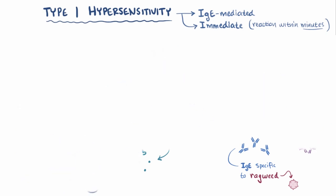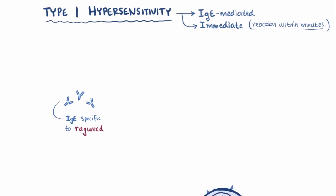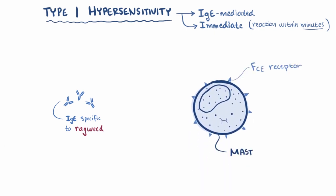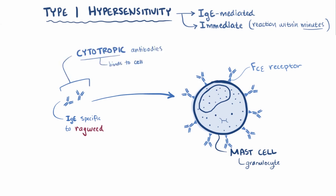These ragweed-specific IgE antibodies have a high affinity for, or basically really like, FC epsilon receptors on mast cells, another type of granulocyte, so they quickly attach themselves to the surface of the mast cells. These antibodies are also called cytotropic antibodies, since they can bind to cell surfaces.